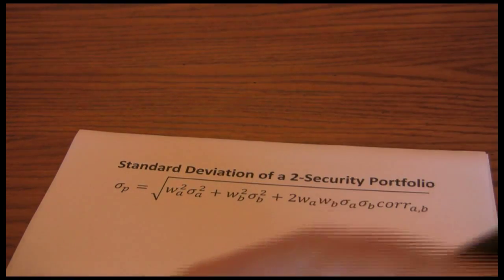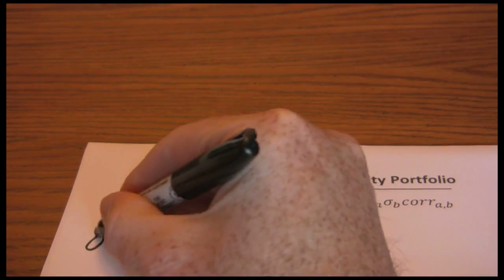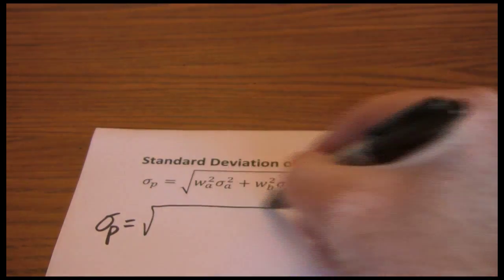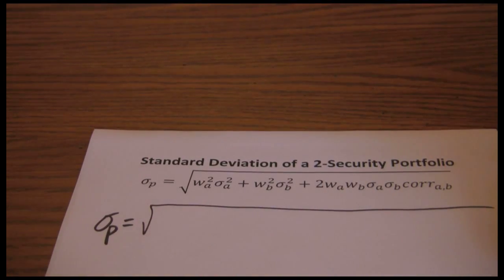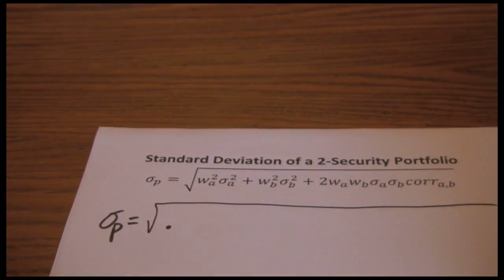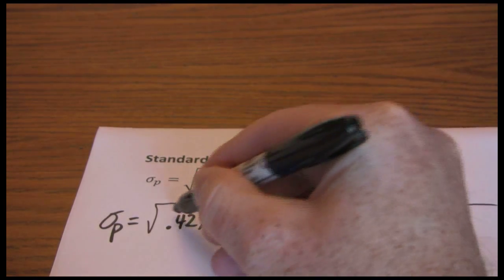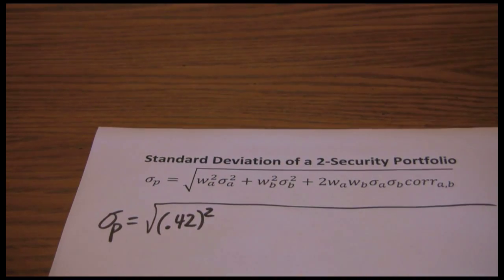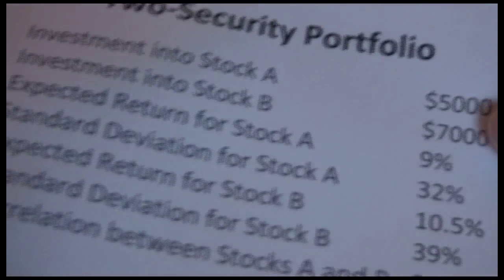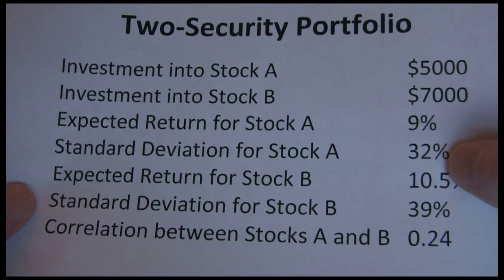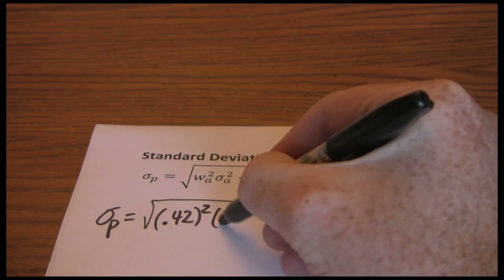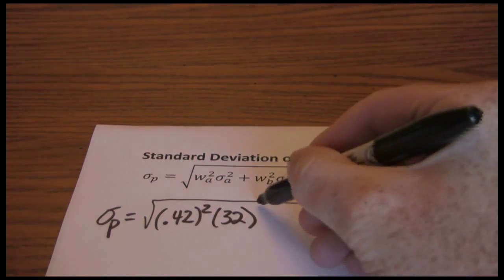So let's start this problem. Standard deviation of our portfolio is the square root of the weight in a squared. We said that weight in a was 5,000 divided by 12,000 or .42 squared. Standard deviation of a is 32% squared.